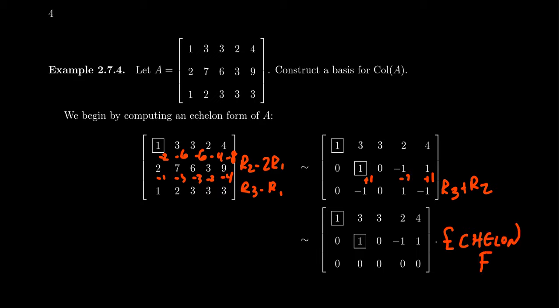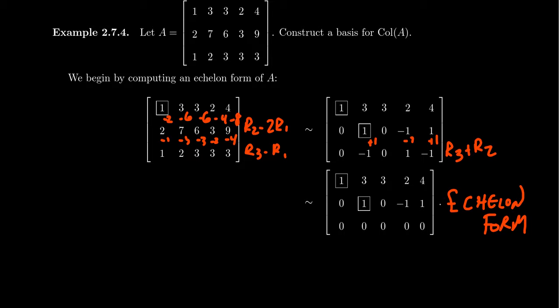We want echelon form because when we are in echelon form, we can identify the pivot positions. We do not need row reduced echelon form to do that. I mean, it's helpful, but we don't need it. We will now recognize that the first and second columns were pivots. So we will then select the first and the second columns of A.